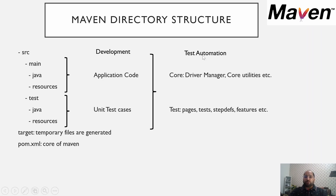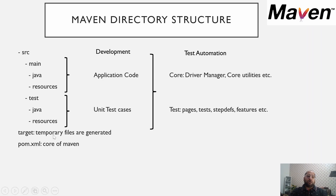From the test automation perspective, when we work in test automation we don't have access to the development source code. So we can utilize both the main section and the test section for automation framework development. SRC main can be used to write core parts such as driver manager and core utilities, with resources holding additional non-Java files for that core part. The test section is used to write test-related files such as pages, tests, step definitions, and features. The target folder is where Maven generates temporary files during the build process.